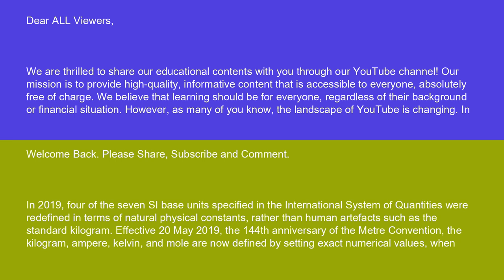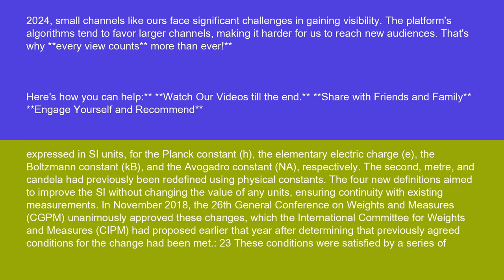In 2019, four of the seven SI base units specified in the International System of Quantities were redefined in terms of natural physical constants rather than human artifacts such as the standard kilogram. Effective May 20, 2019, the 144th anniversary of the meter convention, the kilogram, ampere, kelvin, and mole are now defined by setting exact numerical values for the Planck constant H, the elementary electric charge, the Boltzmann constant KB, and the Avogadro constant NA, respectively. The second, meter, and candela had previously been redefined using physical constants. The four new definitions aim to improve the SI without changing the value of any units, ensuring continuity with existing measurements.